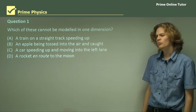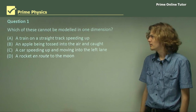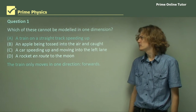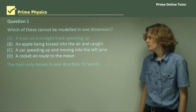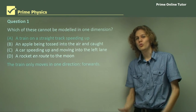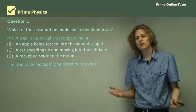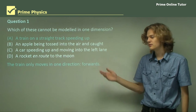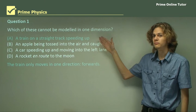Question 1: Which of these cannot be modeled in one dimension? Let's go through them. Option A: a train on a straight track speeding up. Because the track is straight, the train can only move in one direction — or the other direction, but that's still only one dimension. So we can model this in just one dimension; it's not the answer. Option D: a rocket en route to the moon. A rocket only moves in one direction — going up — so it's not the answer either.